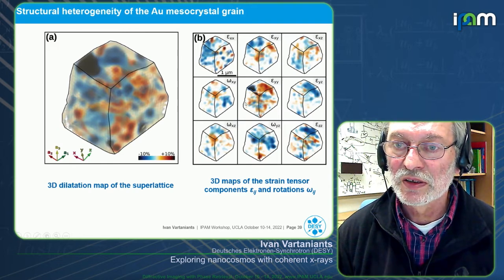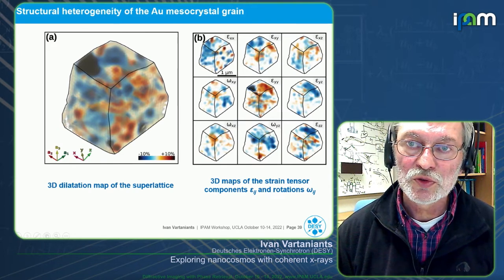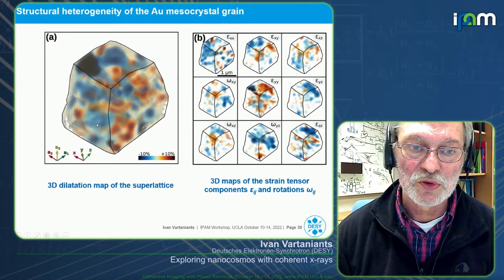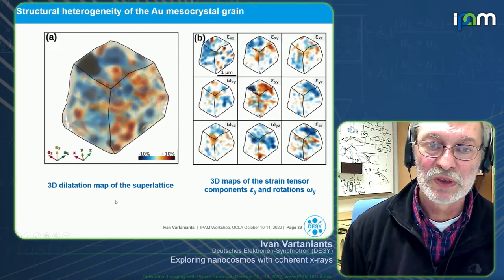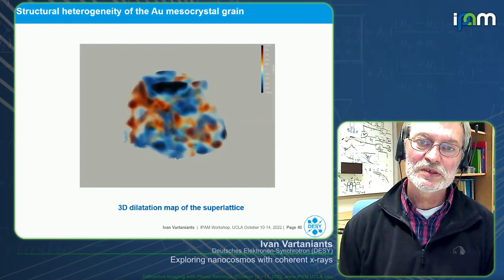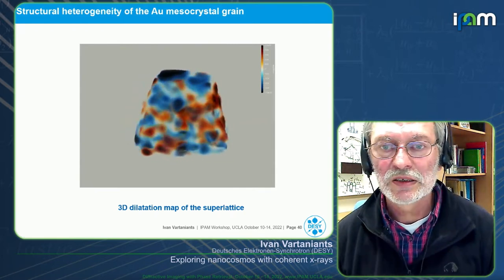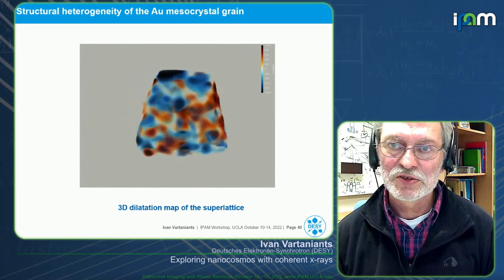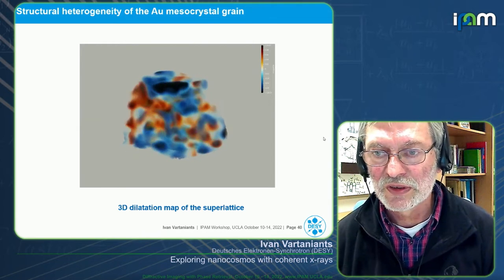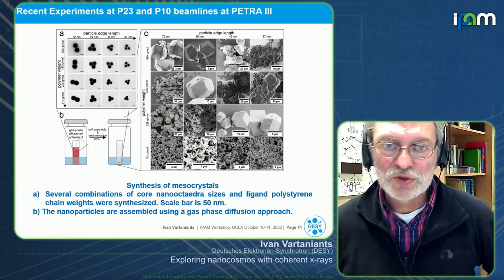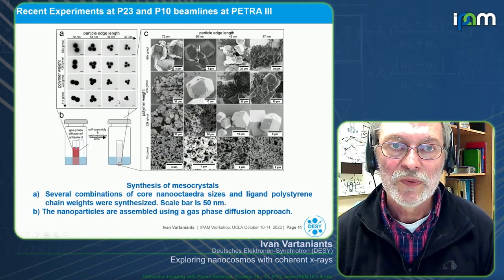Knowing each displacement from the average lattice, we managed to obtain the full 3D map of the strain tensor components and rotation. The sum of the diagonal elements of the strain gives the 3D dilatation map of this superlattice. In 3D we see that it's quite mosaic and distorted, with both extension and compression happening. We continued this work, making experiments on different particle sizes and different polymer weights.